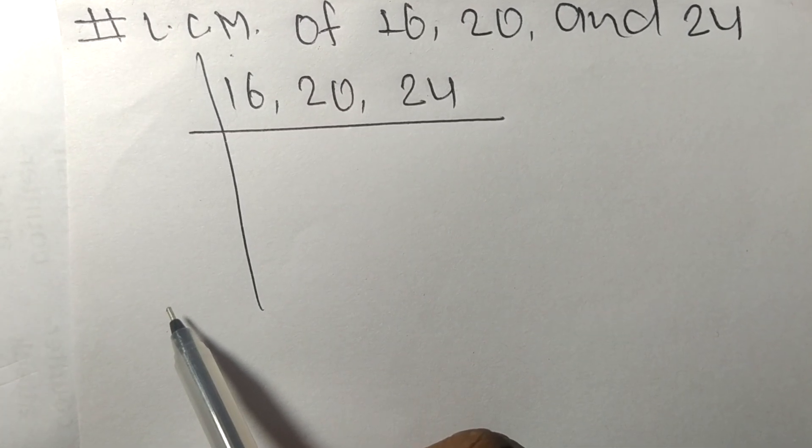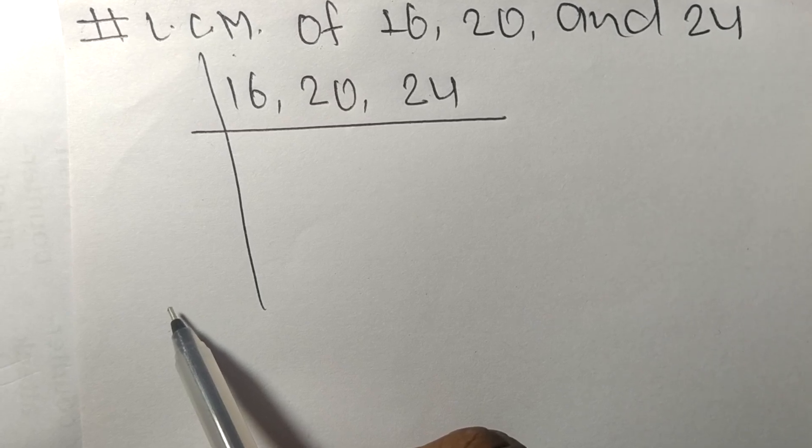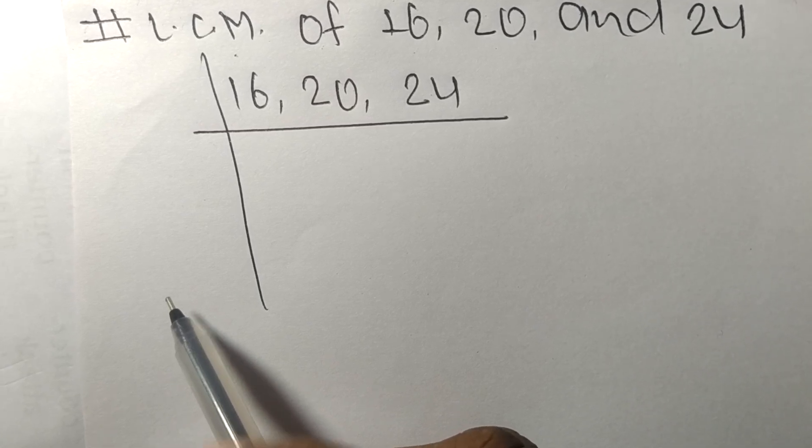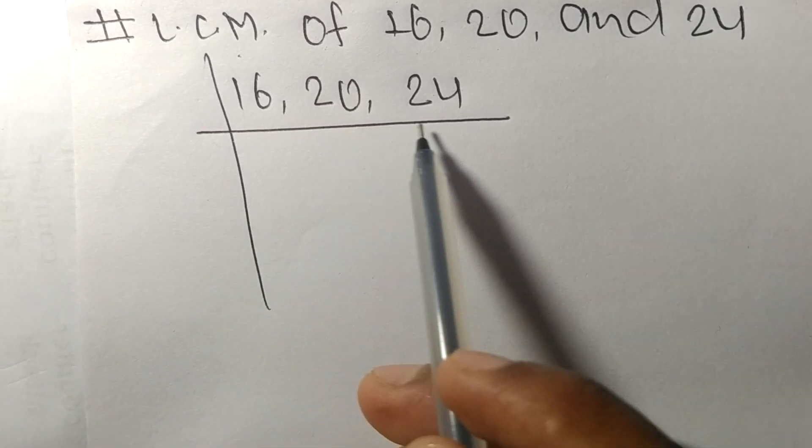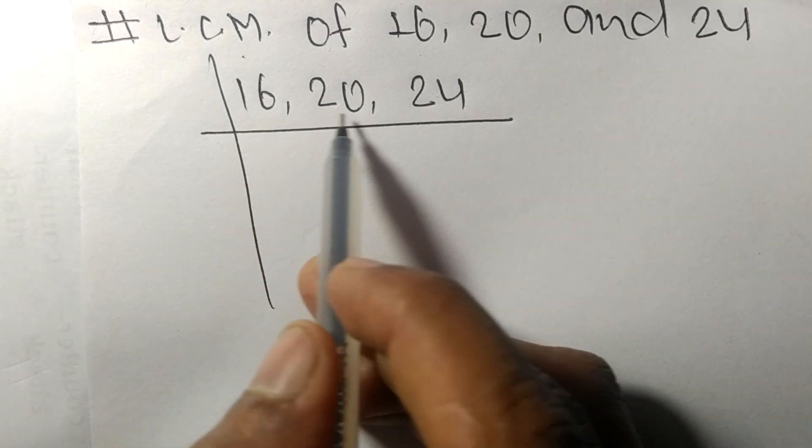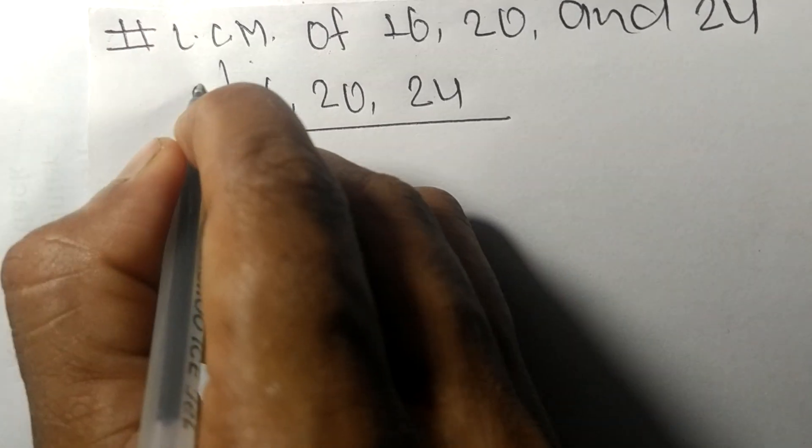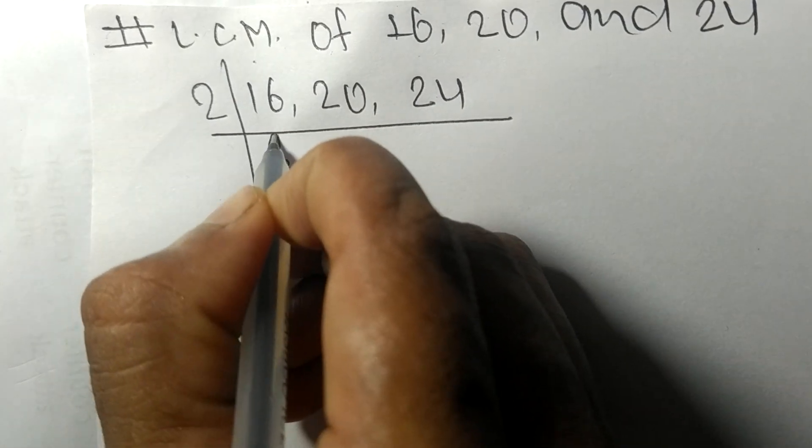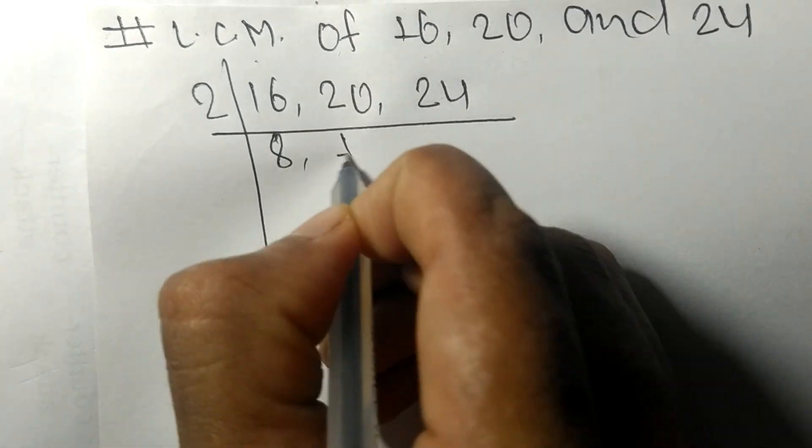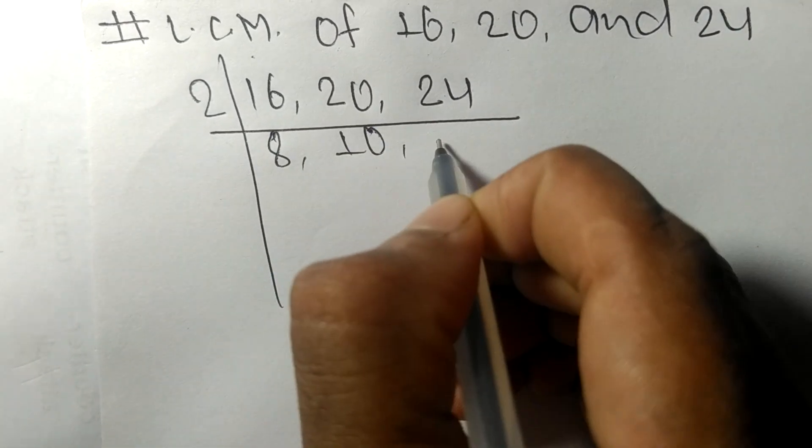To find the LCM, we have to choose the lowest number that can exactly divide at least any two of these numbers. All these numbers are divisible by 2: 2 times 8 means 16, 2 times 10 means 20, 2 times 12 means 24.